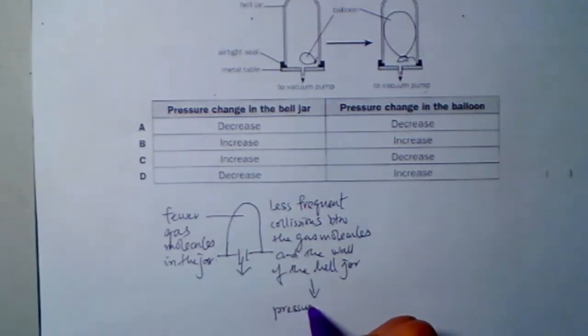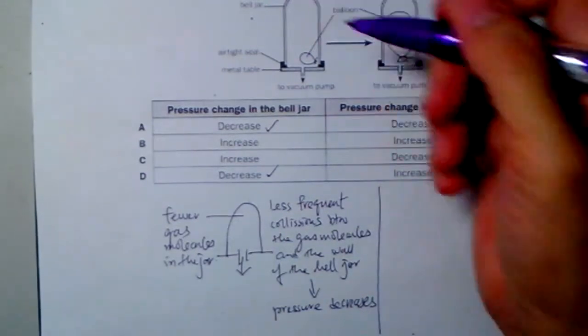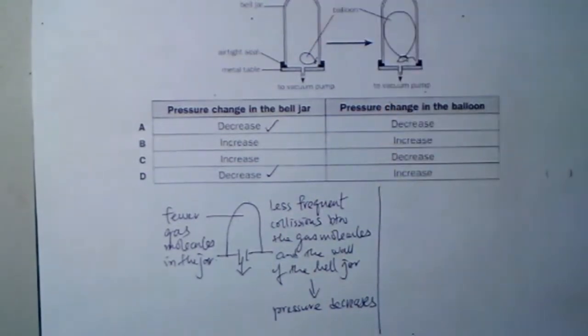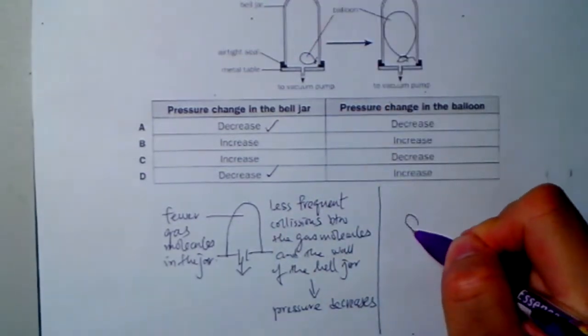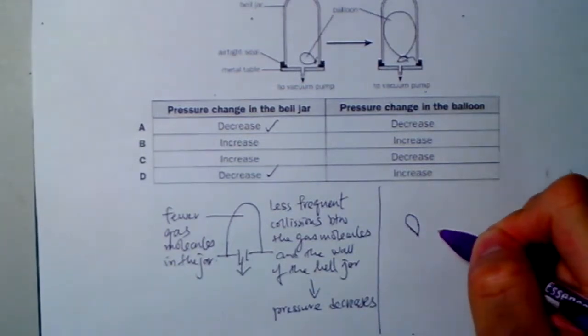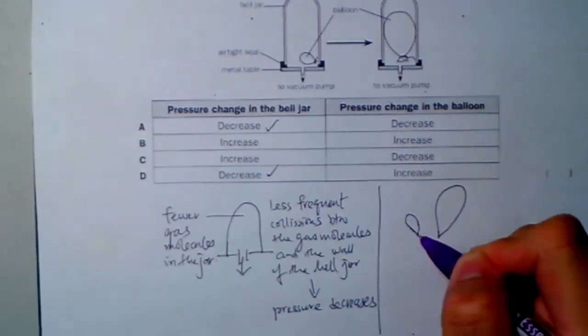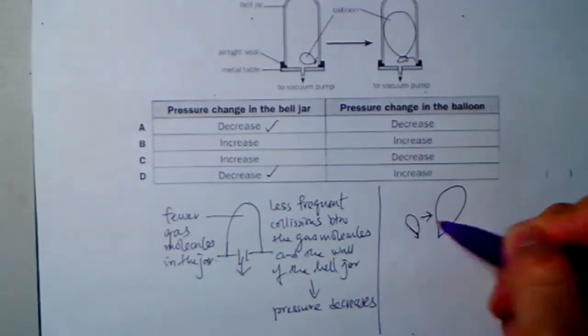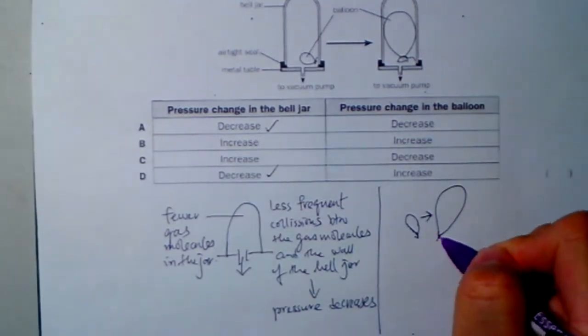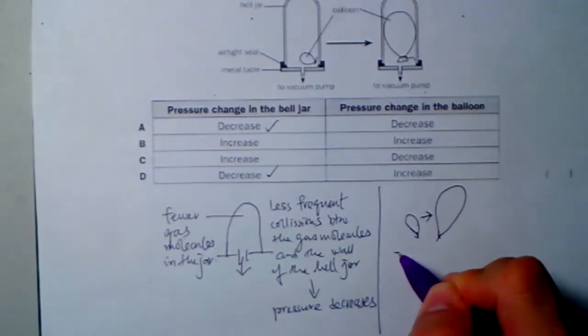Hence, pressure decreases. Now let's look at the balloon. Before, the balloon is of this size. After, the balloon has become this size. Look at it—what have changed? Actually, volume has increased.